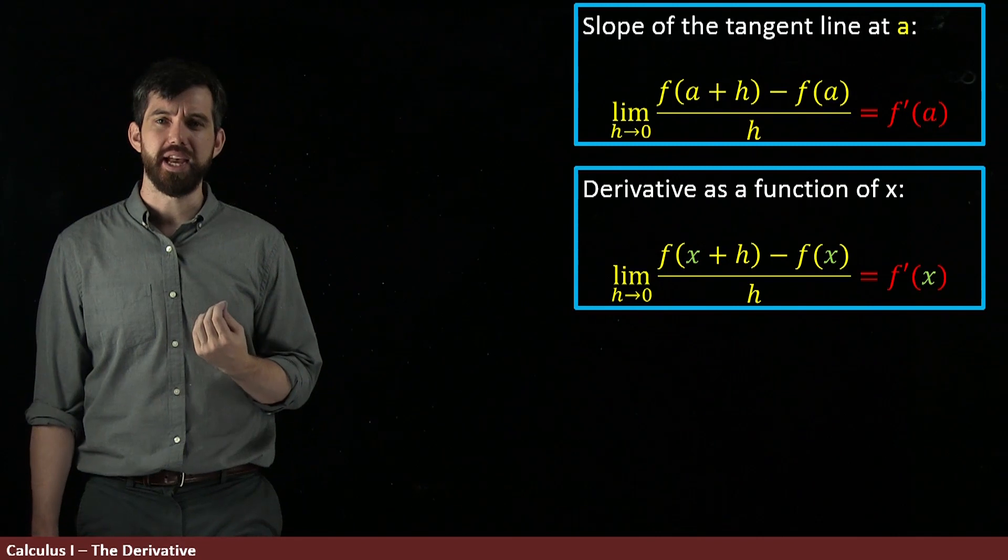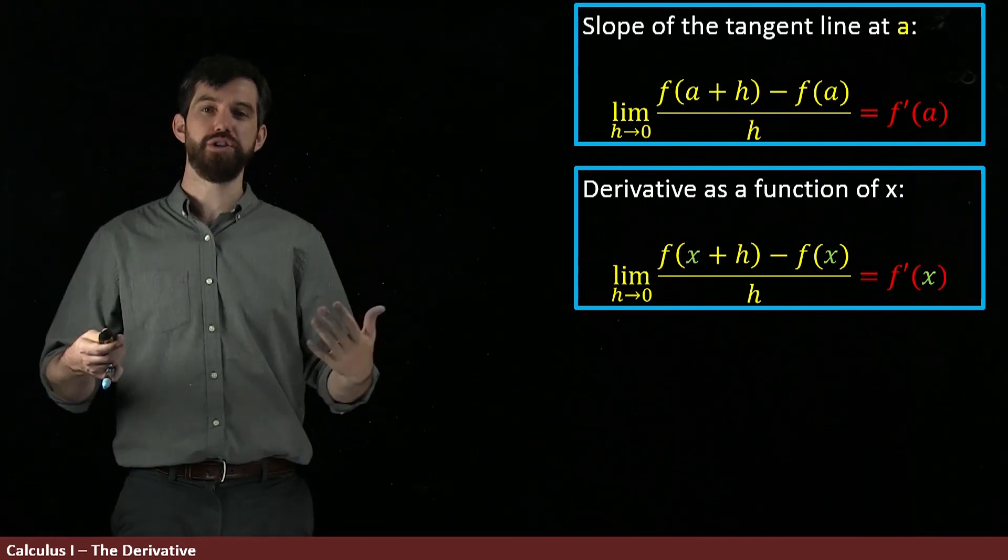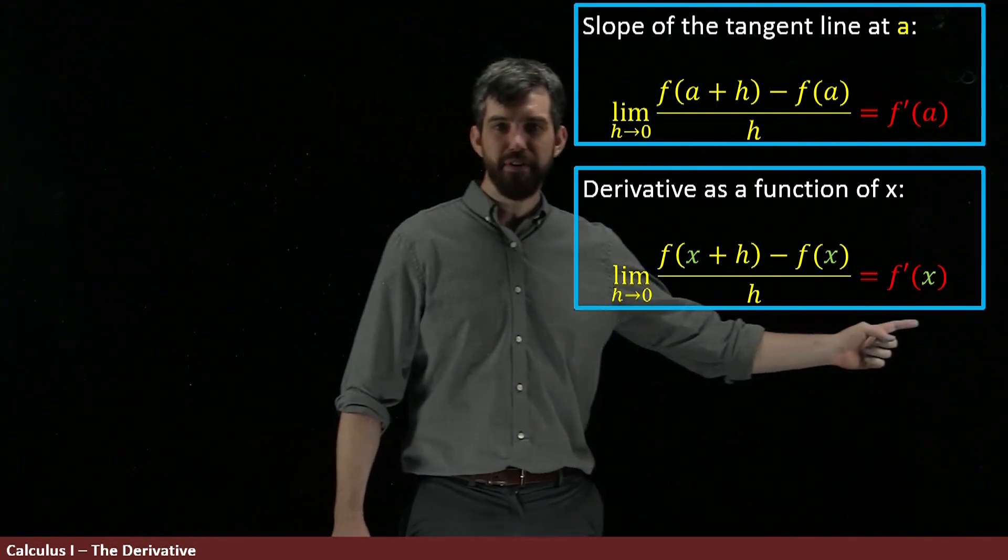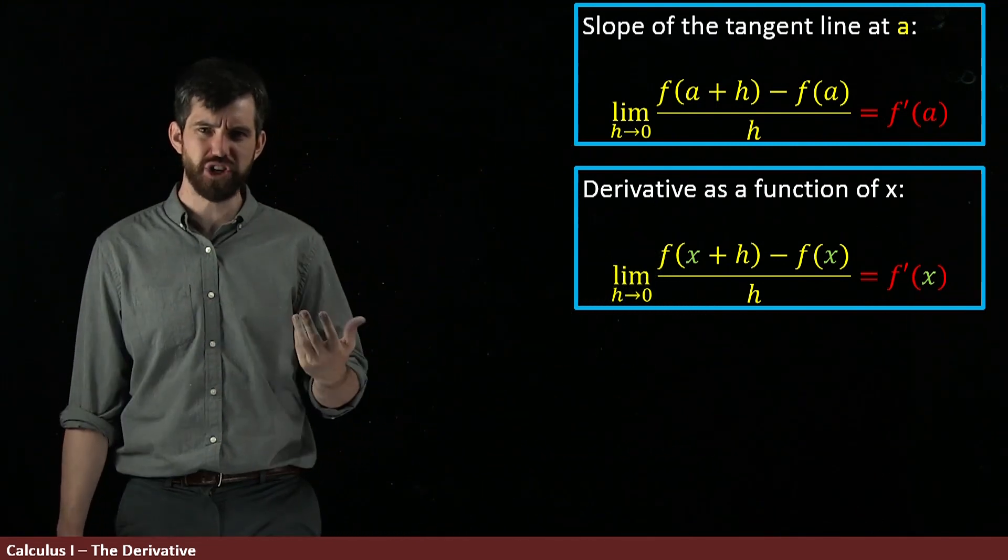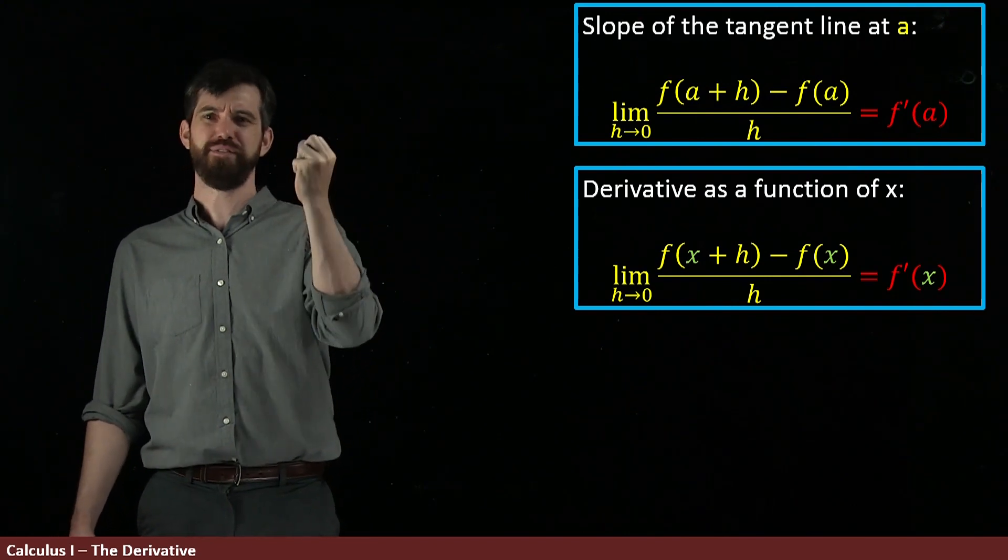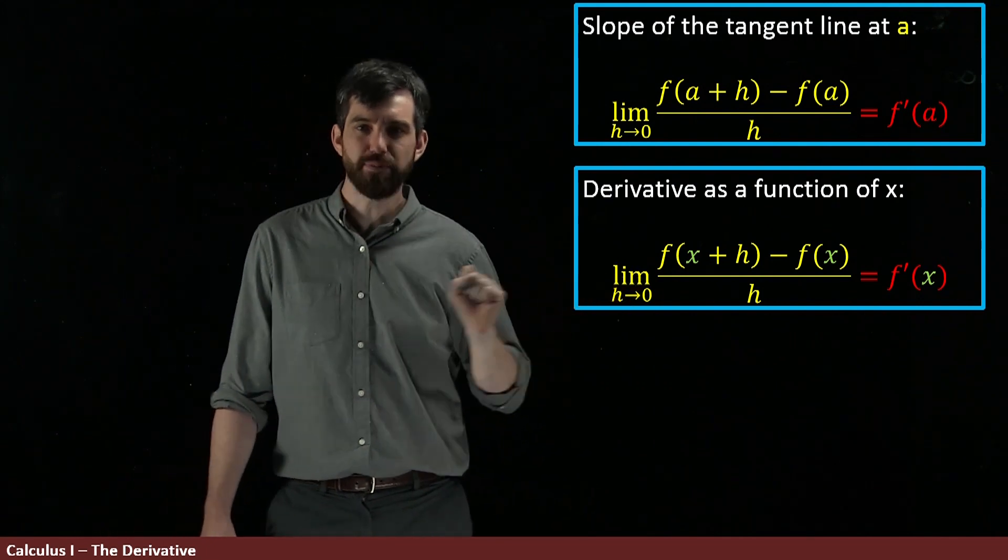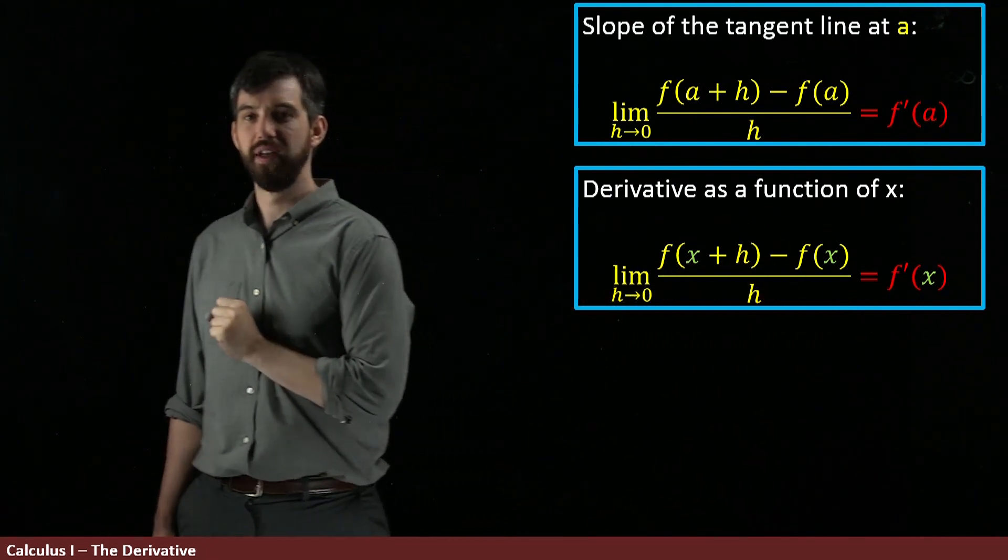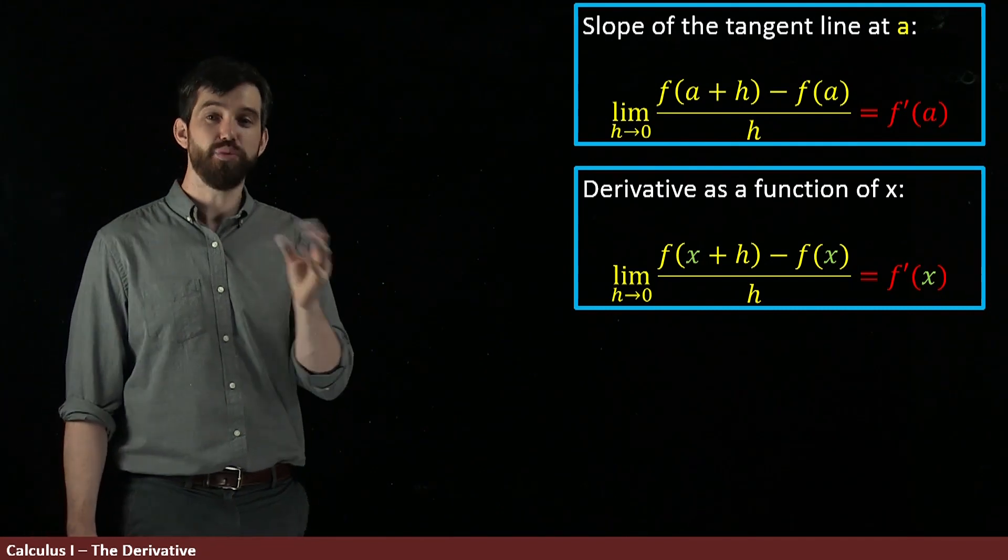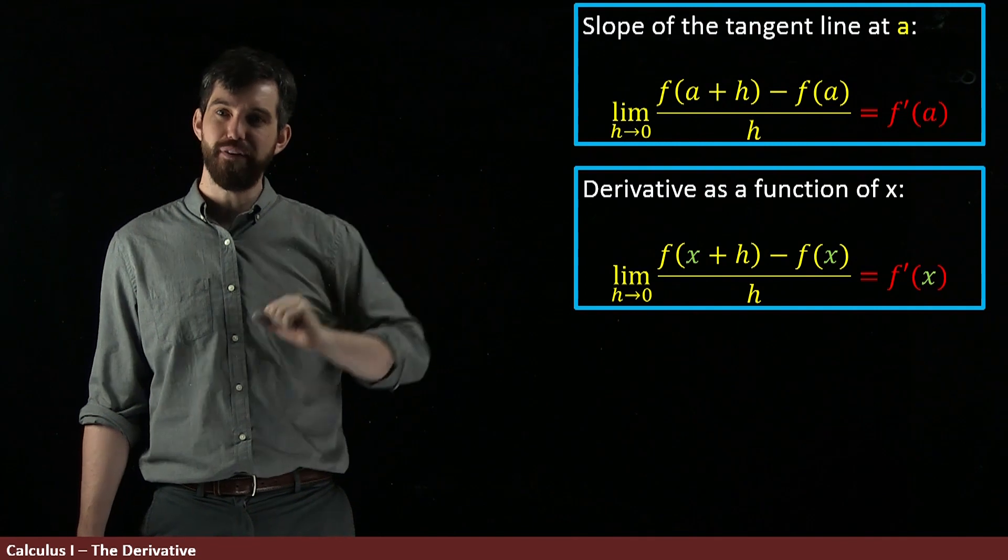So I'm going to actually replace it by thinking of this derivative as a new function. I write f'(x), where x usually denotes a variable in a function, and a is like a specific, specified point. But I do the exact same thing: f(x+h) minus f(x) all divided by h is the derivative at the value of x when I take the limit as h goes to zero. I'm thinking of this as a function.